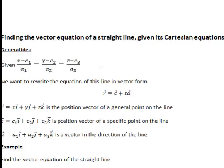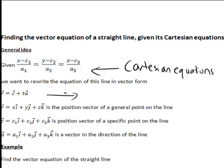By Cartesian equations we mean equations of the type shown here. So x minus c1 divided by a1 equals y minus c2 divided by a2 equals z minus c3 divided by a3, and we want to rewrite it in vector form.